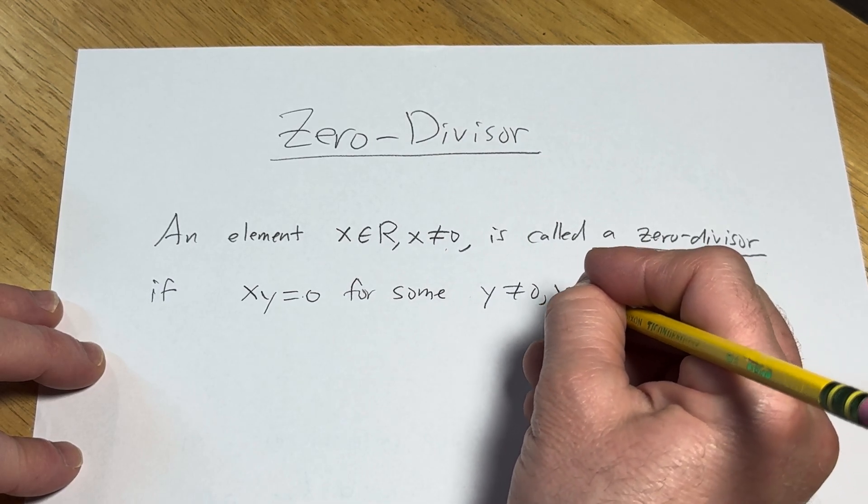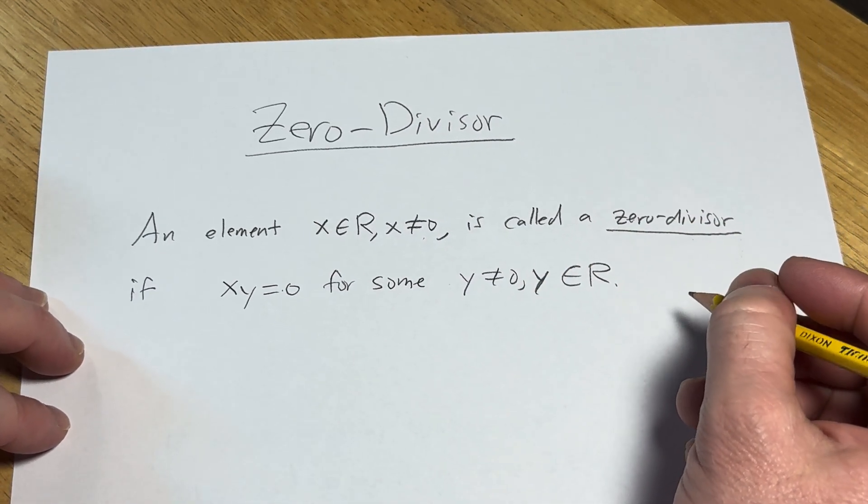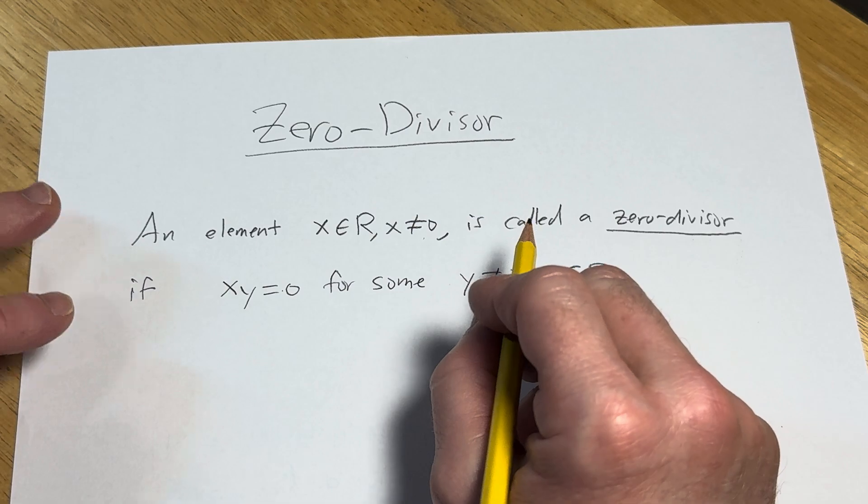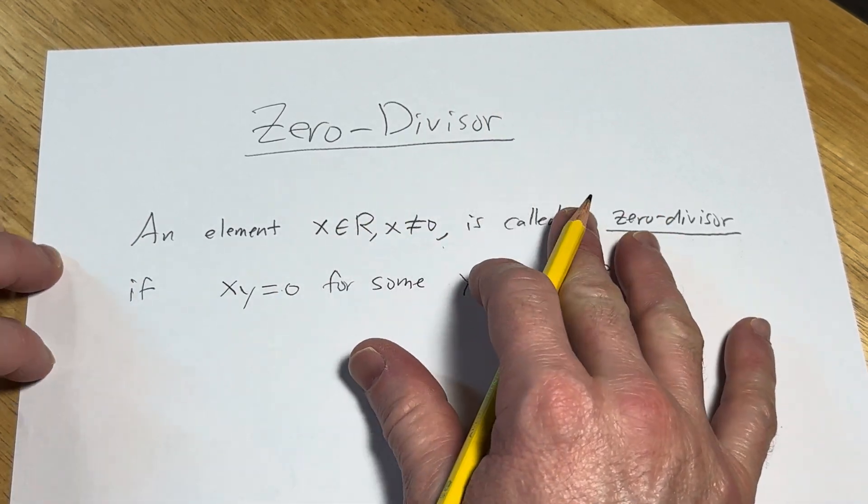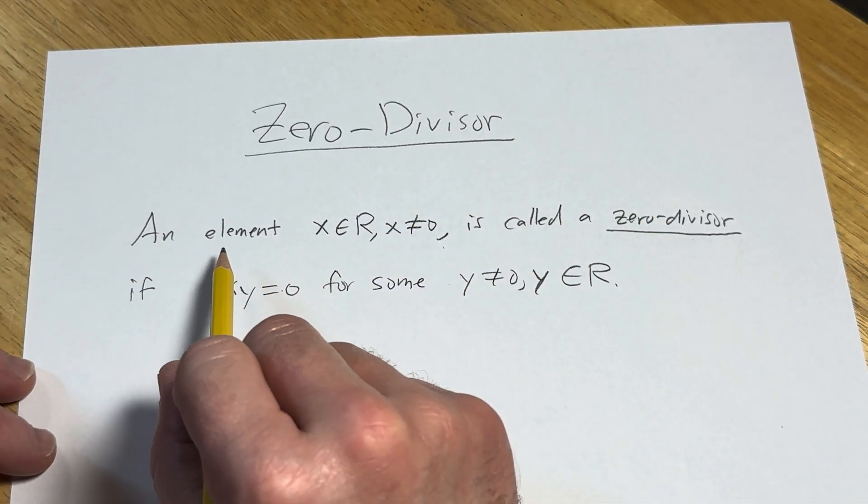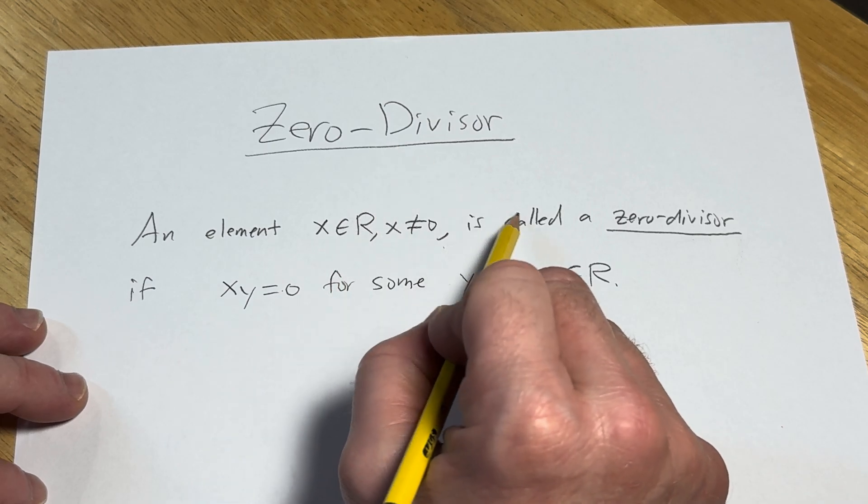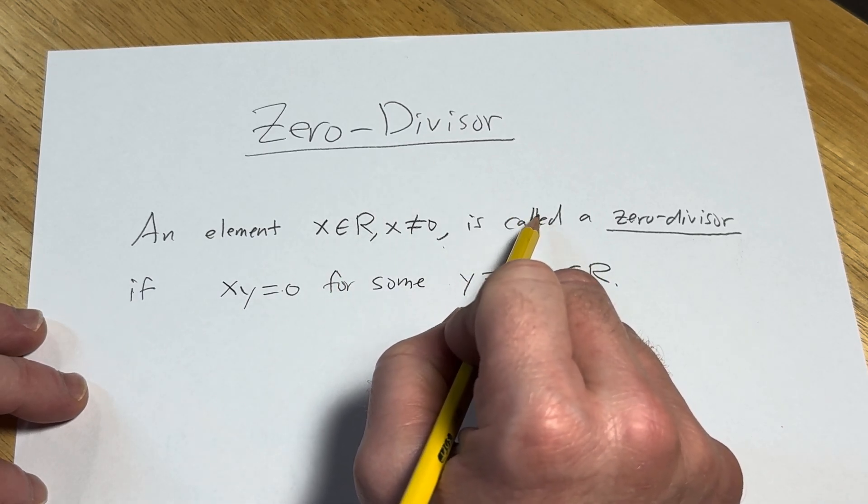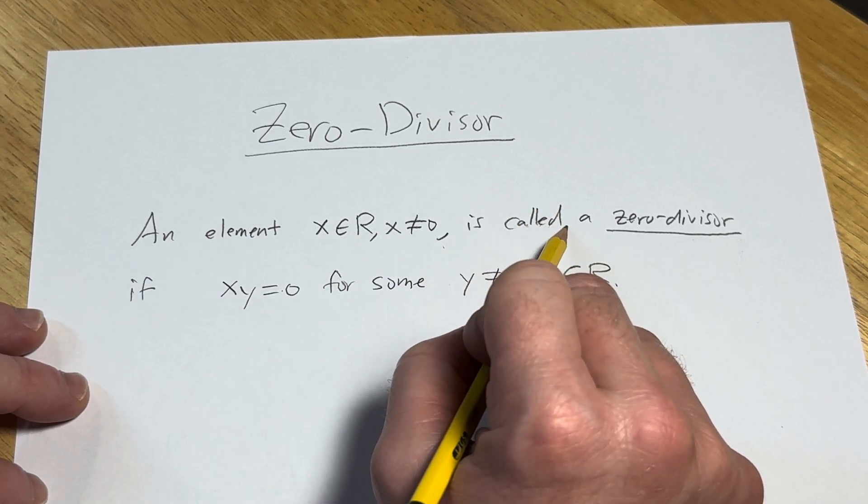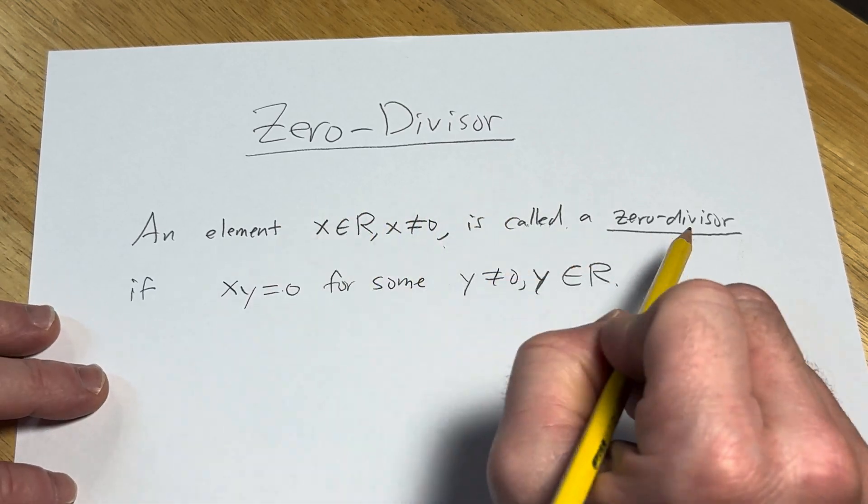So we're not allowing for zero. Some books allow zero to be a zero divisor. We are not allowing that. And it's kind of annoying when you allow zero to be a zero divisor because then you have to keep saying non-zero zero divisors. But we're not allowing it.